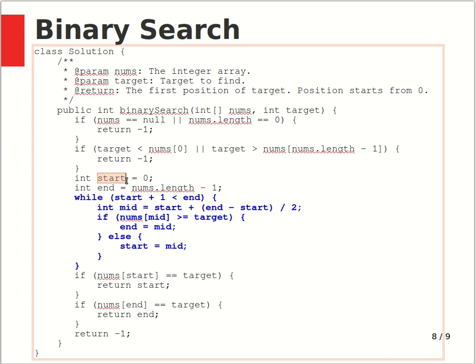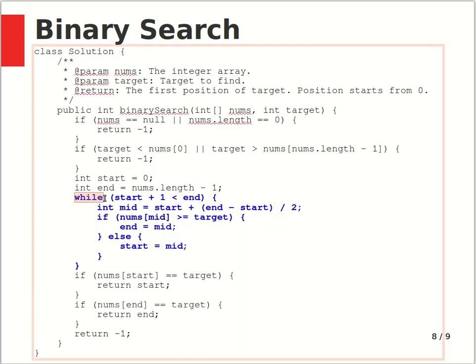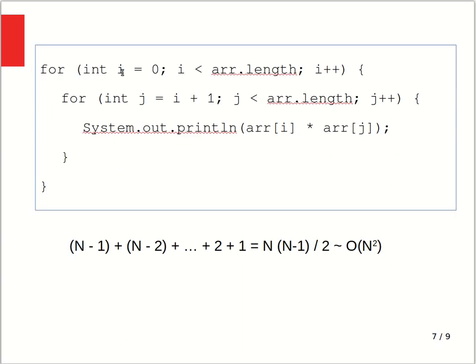To do the search, you set up two pointers: the start pointer points to the first element of the array, and the end index points to the last element, which is the length of the array minus one because it's zero-based indexing. The most time-consuming part of the function is inside a while loop. Unlike for loops we've seen so far, where the number of iterations is fixed at the beginning of the loop, a while loop is different.